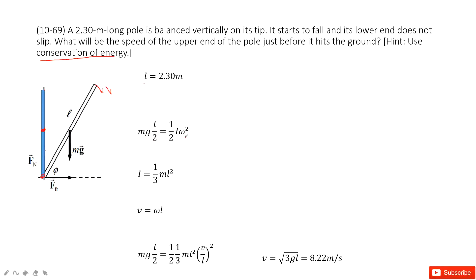So one half I omega squared. And this I is just from our textbook, one third ML squared. You can check your textbook. It is a long rod rotate around one end.